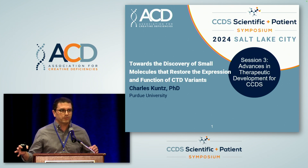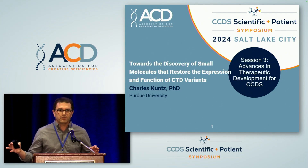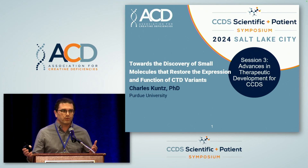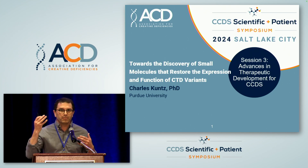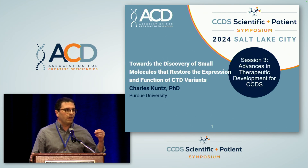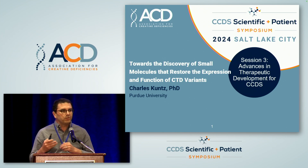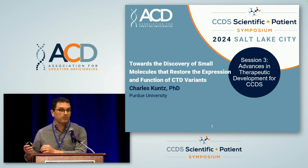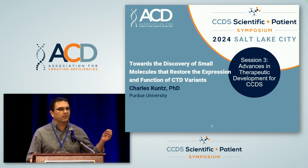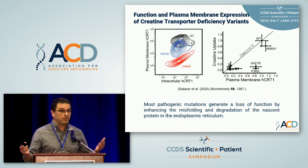Even wild type proteins don't traffic efficiently. We study a number of different systems — the protein involved in cystic fibrosis, the one involved in retinitis pigmentosa that can cause night blindness. For a bunch of wild type proteins, the trafficking efficiency is low; most of them only 50% get to the membrane. When you add a mutational variant on top of that, they just accumulate in the endoplasmic reticulum and very rarely get to the cell surface. This is exactly the problem we have in CTD.